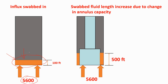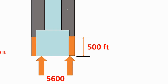After getting a swab kick, let's say the applied BHP downwards is 5650 psi. Will you get a positive flow check? No. After getting the swab kick, the hydrostatic pressure is still more than the formation pressure, so the result of the flow check will be negative.